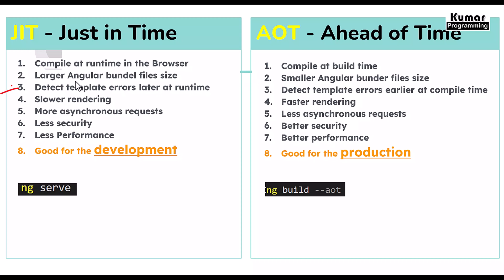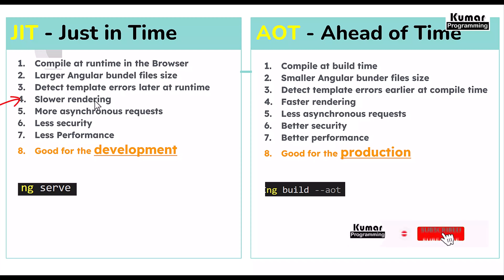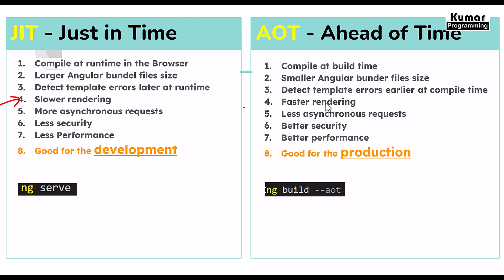The third difference: JIT detects template errors later at runtime because compilation is done at the browser side. But with AOT, any error in the template is detected at compile time itself. Additionally, JIT has slower rendering because compilation and rendering both happen at runtime, whereas AOT has faster rendering because it only needs to render already-compiled code.